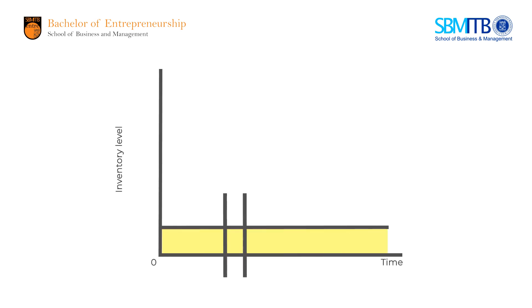This is how we put a probabilistic demand into a graph. The figure shows the use of safety stock when demand is probabilistic. We start out with an order quantity Q, which is not constantly used up over time.